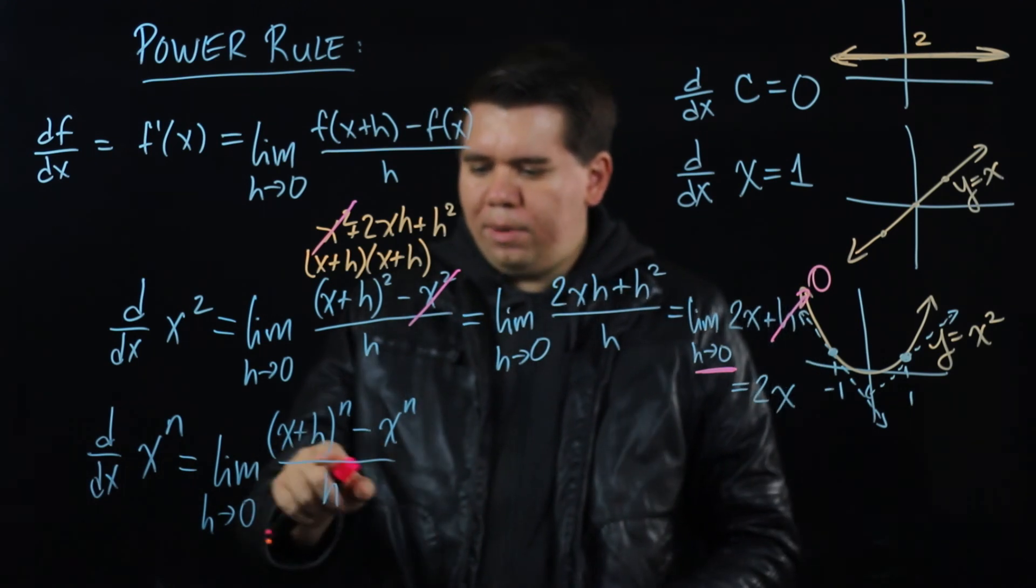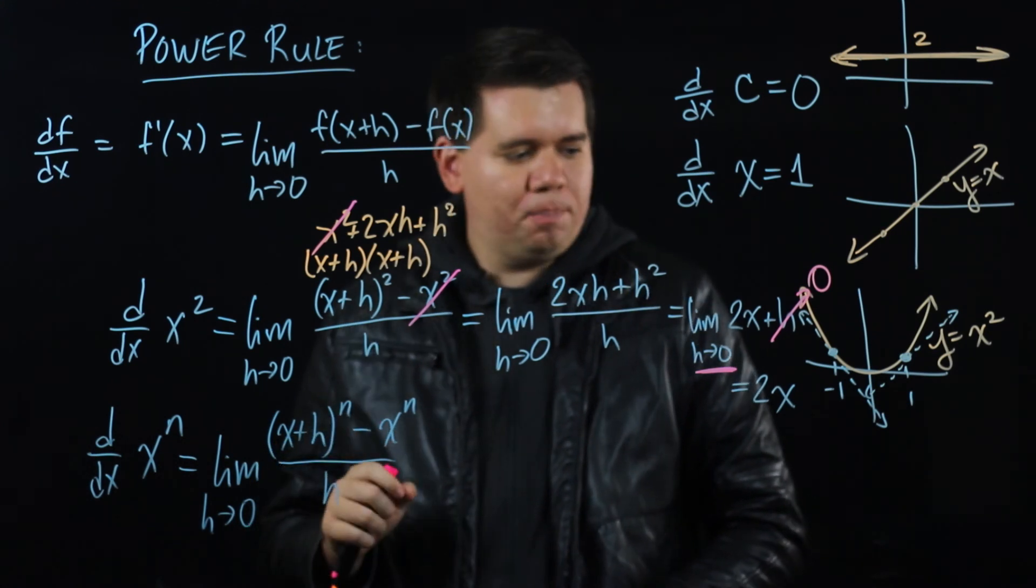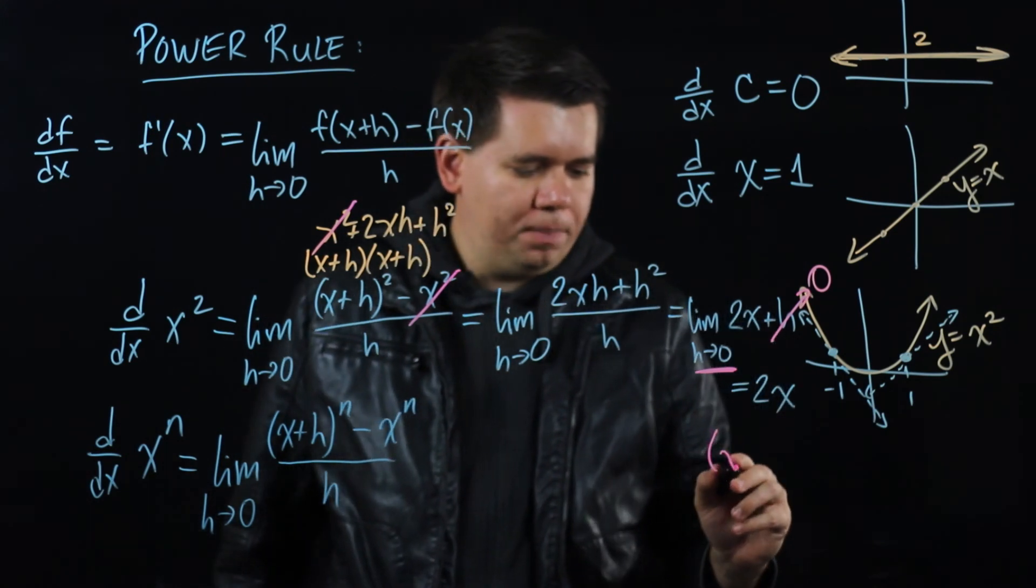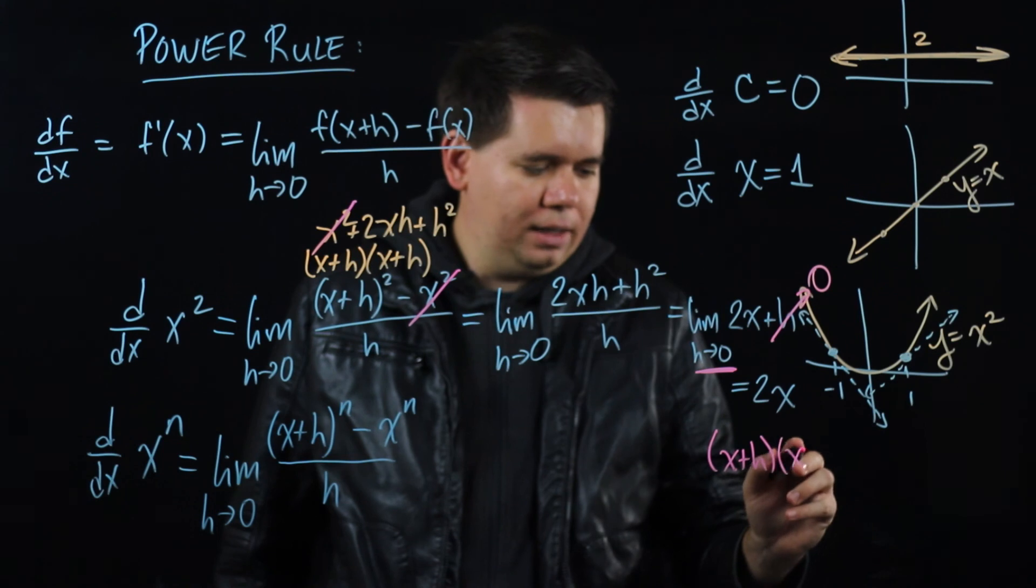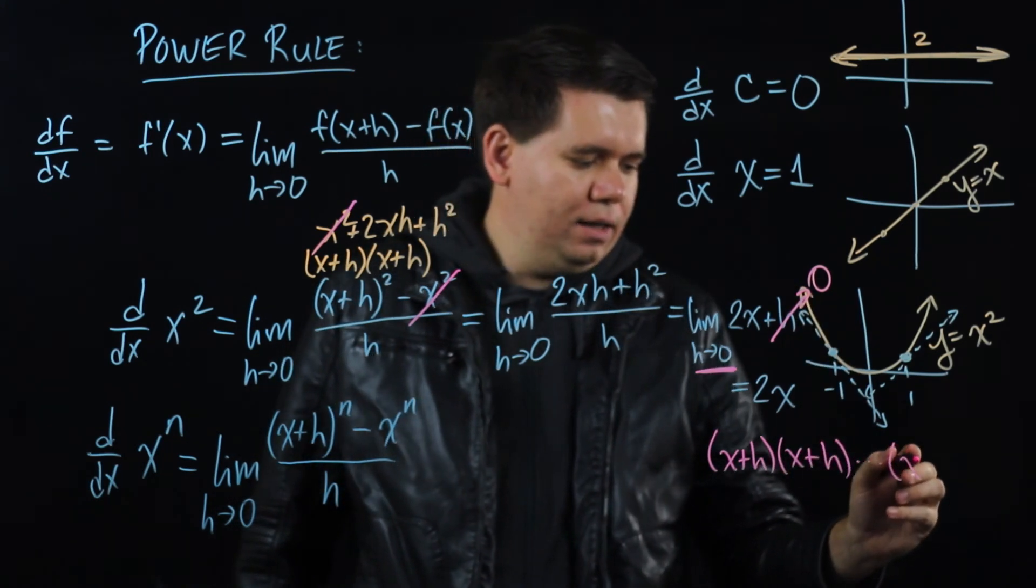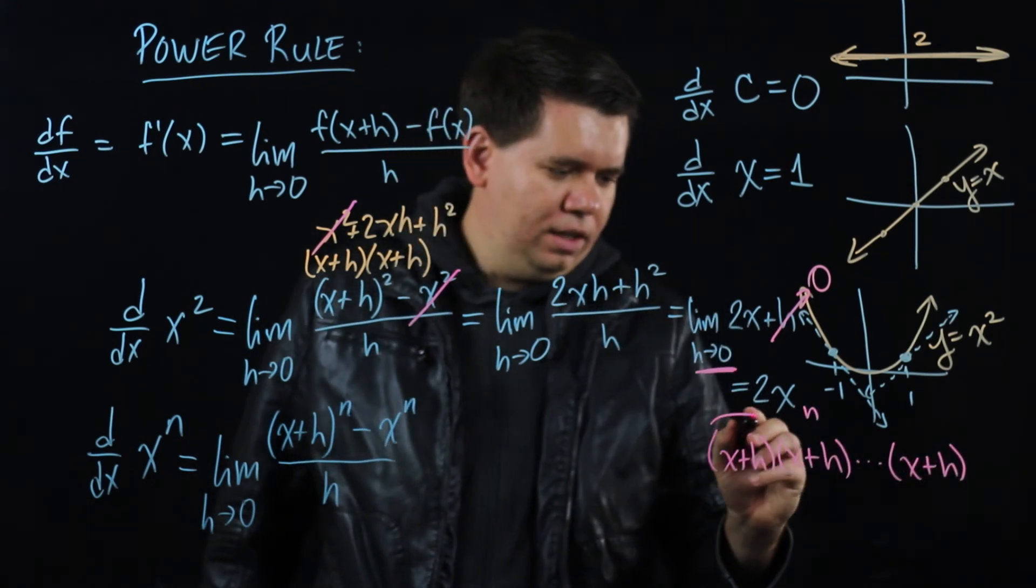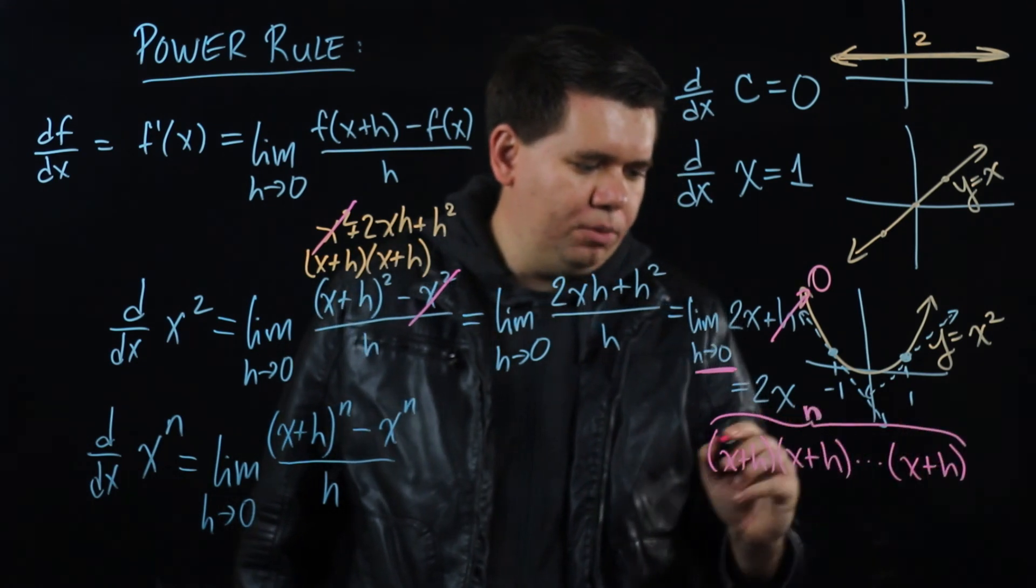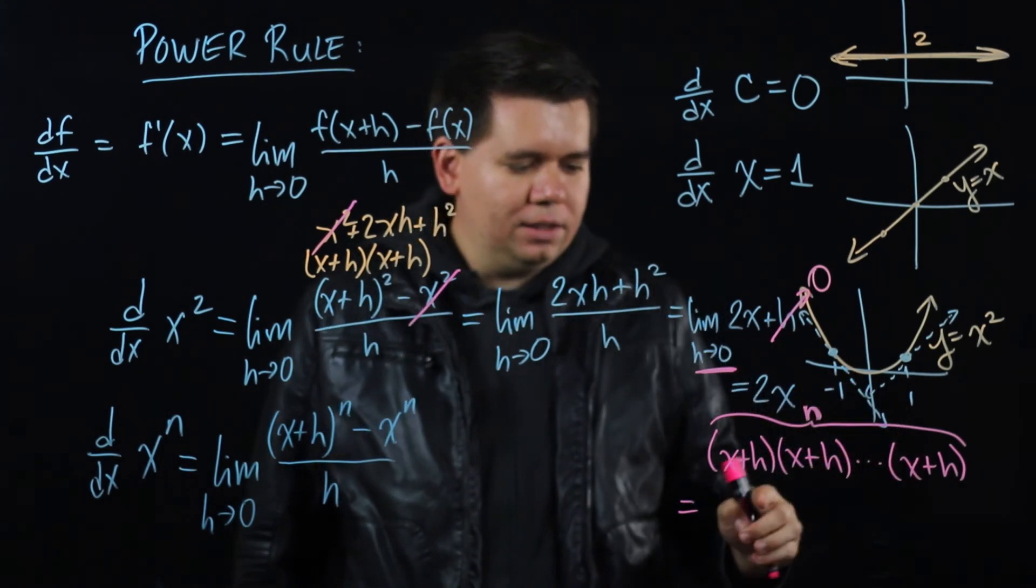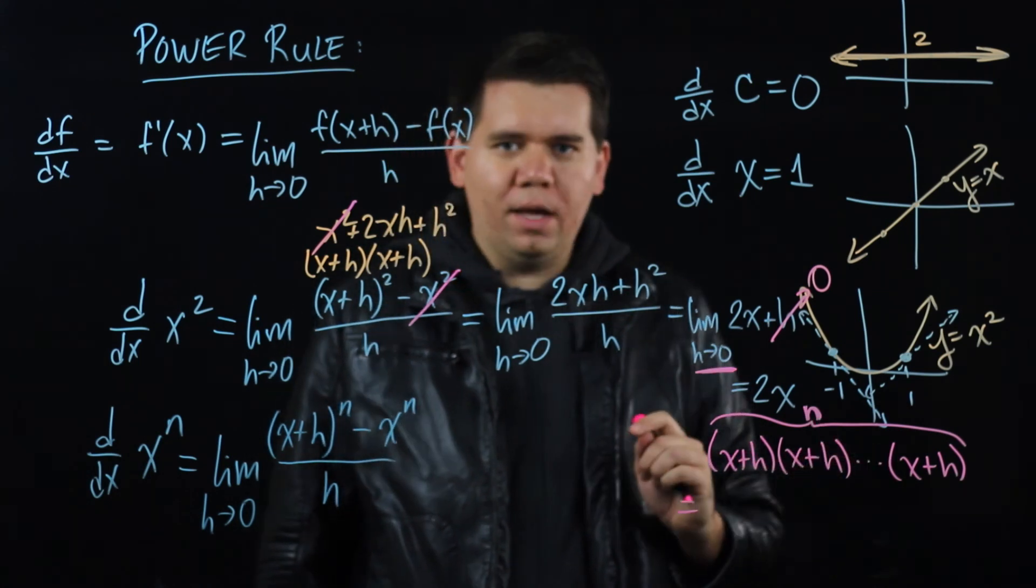Okay. Now that we have this you might be a little bit stuck on the first term. What is (x+h) to the nth power? So let's come over here and think about it. (x+h) to the nth power would be (x+h) times (x+h) times (x+h) again and again and again n times. So if you have n copies of (x+h) being multiplied with itself, let's think about what that would give you.